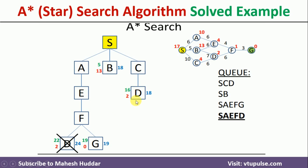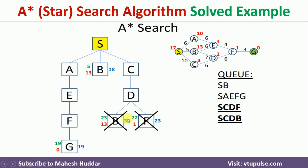We still have two possibilities: S→C→D and S→B. We ignore the path through D from F (cost 24). For S→C→D, from D we can go to B or F. Going to B: 10 + 6 + 7 = 23 (wait — 10 + 6 = 16, 16 + 7 = 23... with heuristic 13, total = 37). Going to F: 10 + 6 + 6 = 22, plus heuristic 1 = 23. Both are more than 19, so we ignore these paths.